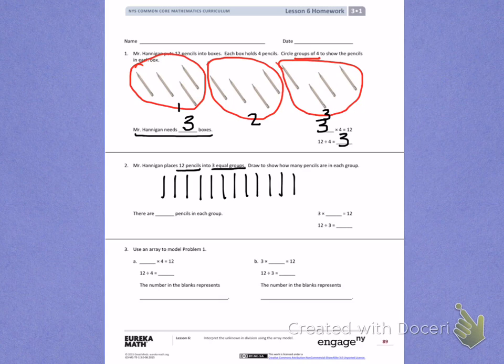This is very similar to what we just did on the top. We had 3 groups on the top. Now I need to make 3 groups on the bottom. I know that if I'm making 3 equal groups, I have to have 4 pencils in each group to make those 3 equal groups. Now the questions I'm being asked are a little different than the top, so don't just copy the answers from the top. There are blank pencils in each group. When I look at the first group, there are 4 pencils. The second group, there are 4 pencils. And the third group, there are 4 pencils. So I have 4 pencils in each group.